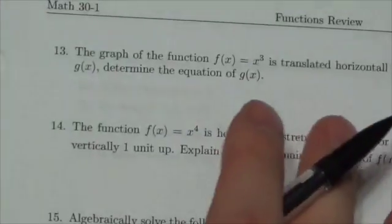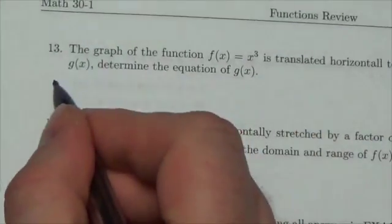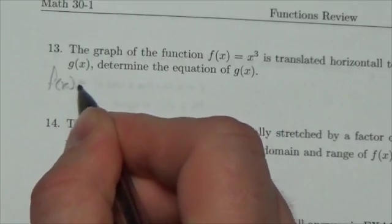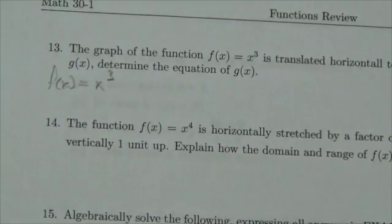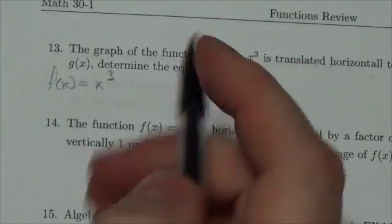Now, before we look at any other part of this question, let's just consider what's going on there. We're starting with this function, f(x) is equal to x cubed, and then we're going to create a brand new function by applying a horizontal translation.